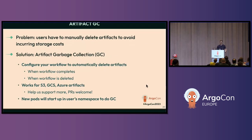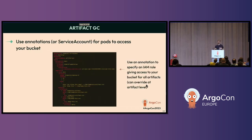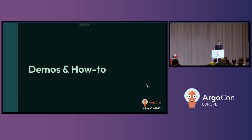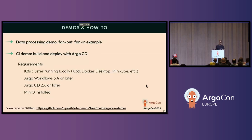That covers all the features for managing artifacts at scale. Now we're going to try our luck with a couple of live demos. We're going to show a workflow that does a simple fan-out/fan-in example and highlight what artifact management configurations we're using. And then we'll also do a CI demo where we'll build and deploy a web app with Argo CD. All of this is available on GitHub — check out the PipeKit GitHub org to find these talk demos.